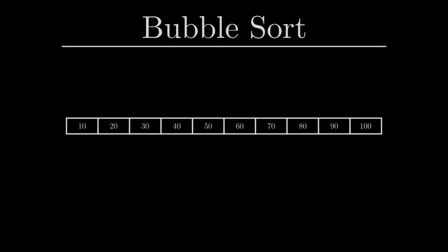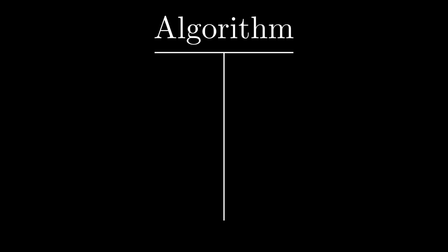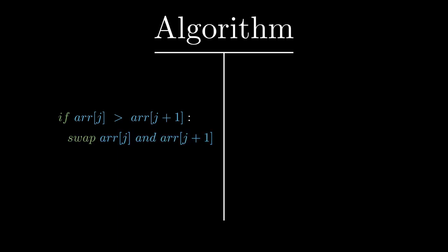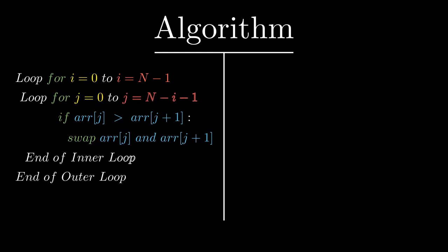The most important part of the bubble sort algorithm is to compare two adjacent elements of the array, and if the element at the current index is greater than the element at the next index, then we need to swap it. We need to do this for the entire array and for each pass, so we need two for loops. The outer loop takes care of each pass, and since after each pass the largest element is placed at the very last index, we decrease the range of the inner loop by subtracting i, which is the count of passes completed.